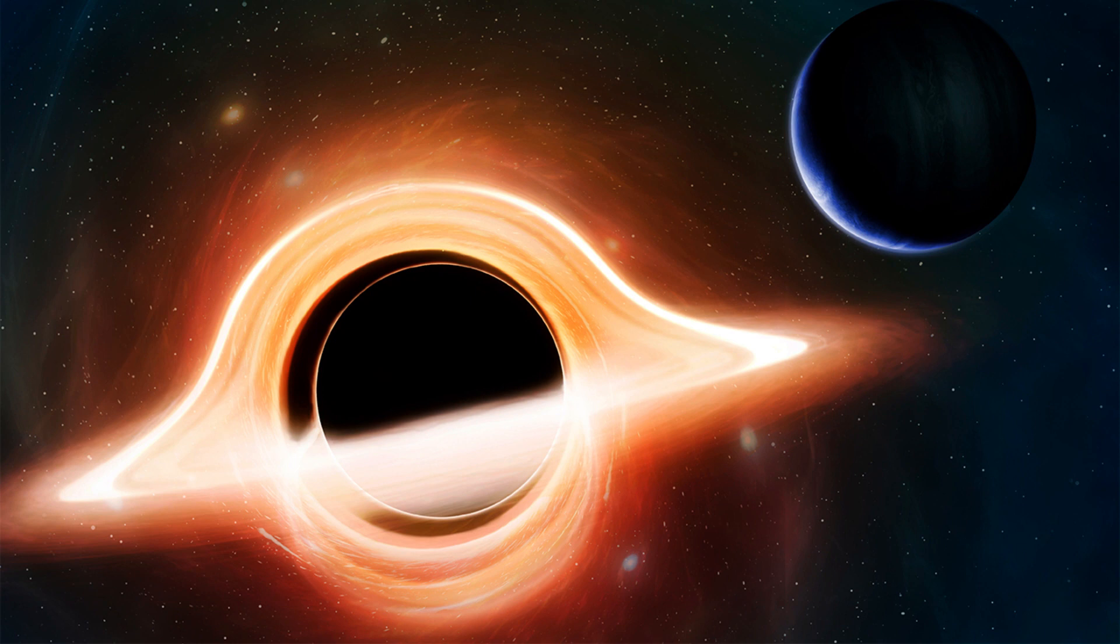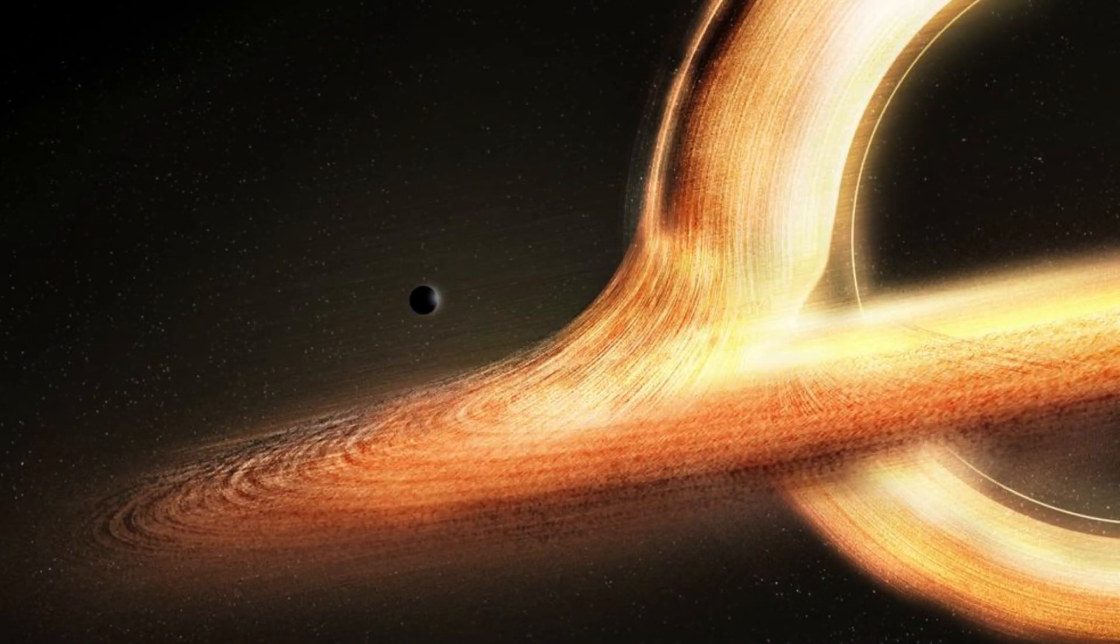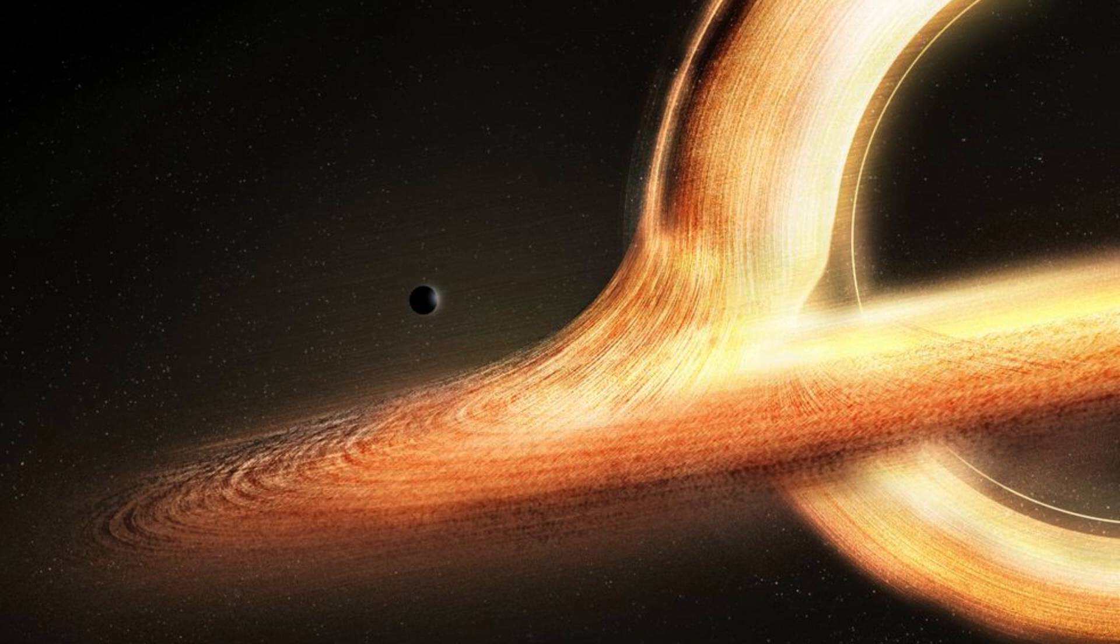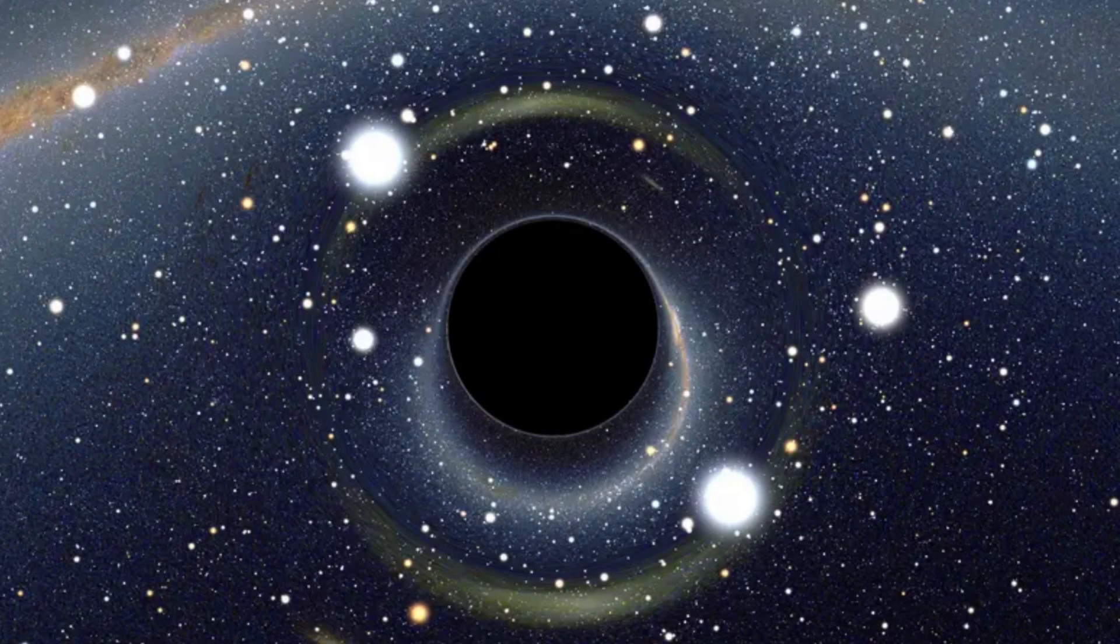Black holes can form through several different mechanisms. The most common is stellar collapse. Most black holes are the remnants of massive stars that have exhausted their nuclear fuel. When such a star's core can no longer support the gravitational pressure pushing inward, it undergoes a catastrophic collapse. The core implodes, and if the mass of the collapsing core exceeds a critical threshold, about 2.5 to 3 times the mass of our sun, it collapses into a black hole.